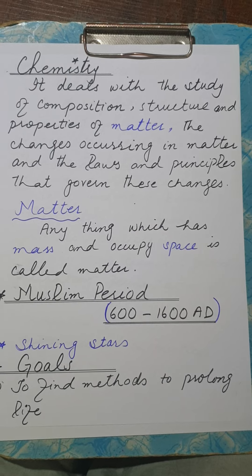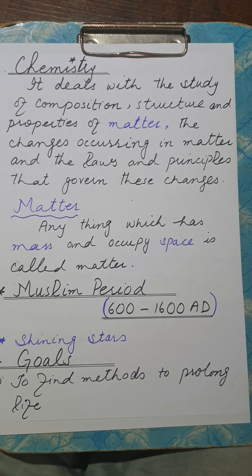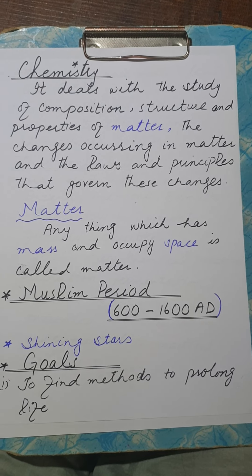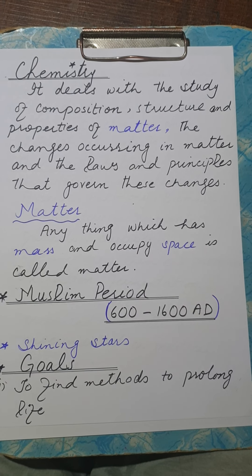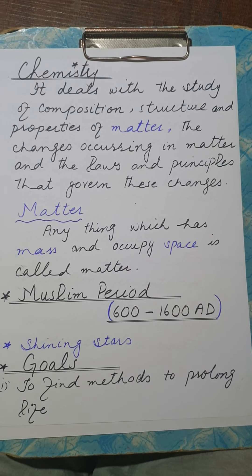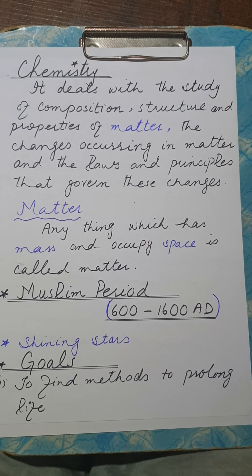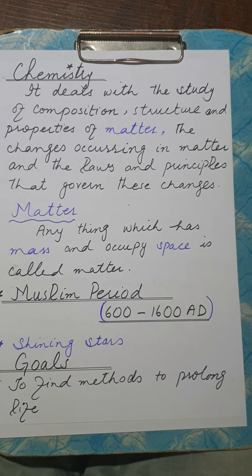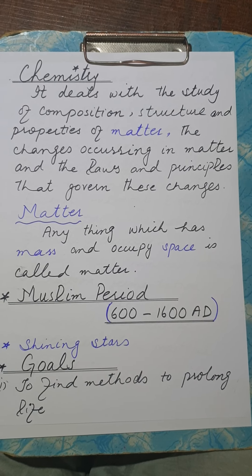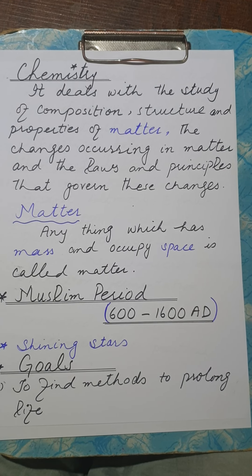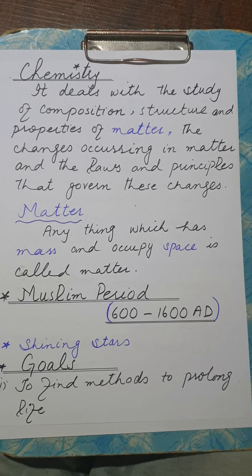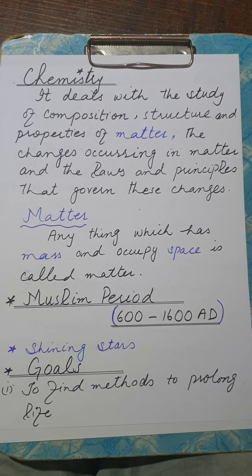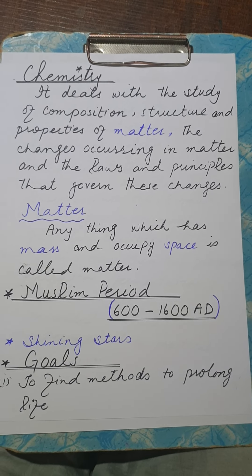Chemical changes are the changes in which new substances are produced, and these are changes which are irreversible. For example, the burning of coal — the ash produced is a new substance. Remember that chemical changes are all irreversible changes; you cannot reverse them.